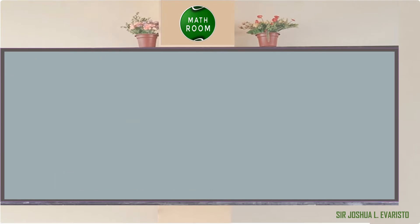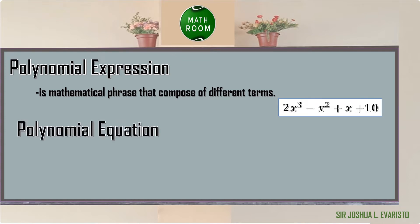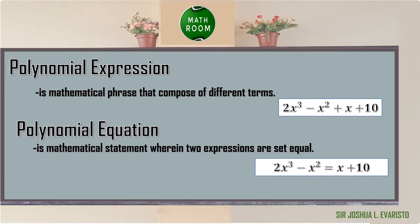We already know from the previous lesson that a polynomial expression is a mathematical phrase composed of different terms. An example is 2x cubed minus x squared plus x plus 10, which has four terms. A polynomial equation is a mathematical statement wherein two expressions are set equal. An example is 2x cubed minus x squared equals x plus 10.